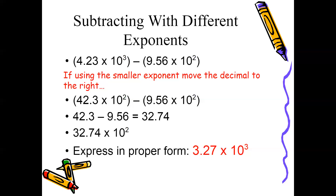Now that exponents are the same, subtract the coefficients, making sure to align your decimals. Subtracting 9.56 from 42.3 gives you 32.74. This is not in scientific notation form because 32 is greater than 10. Move the decimal one place to the left, increasing the exponent by one. The final answer is 3.274 × 10³.